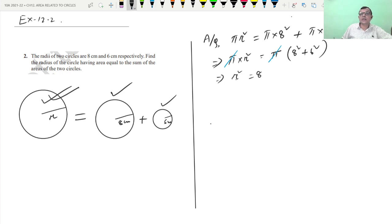r square equals 8 square plus 6 square. This implies r square equals 64 plus 36, r square equals 100. So r square equals 10 square, r equals 10 centimeters.